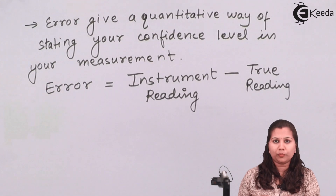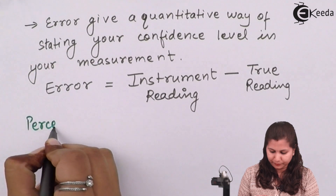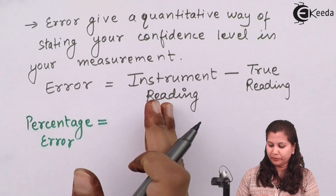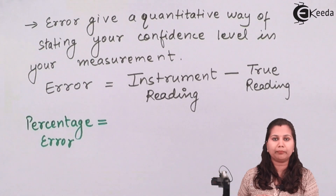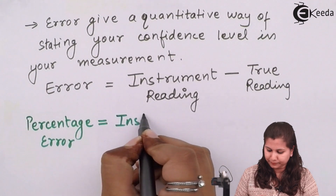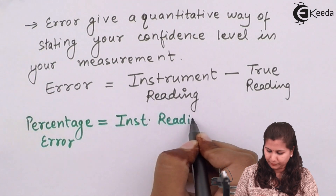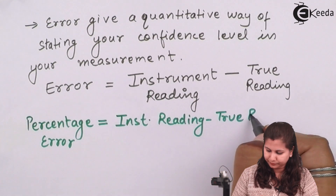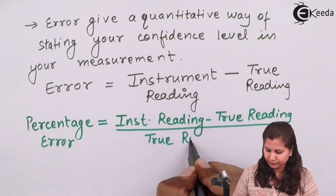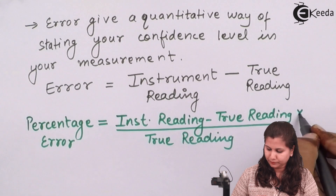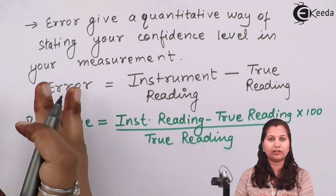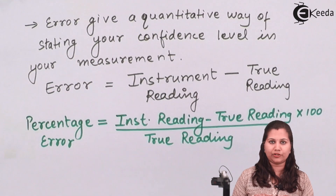This error can also be expressed in the form of percentage error. Percentage error equals instrument reading minus the true reading, divided by the true reading, multiplied by 100. So we can express errors in the measuring instrument both as a plain difference and also in the form of percentage error.